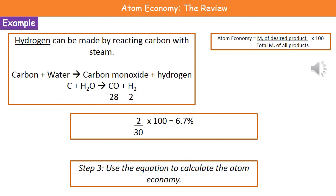The last step is to put those numbers into the atom economy equation. The mass of the desired product, hydrogen, is 2. We divide that by the total masses of all products: carbon monoxide plus hydrogen, which is 28 plus 2, giving us 30. So the calculation is 2 divided by 30, multiplied by 100, which gives us an answer of 6.7%.